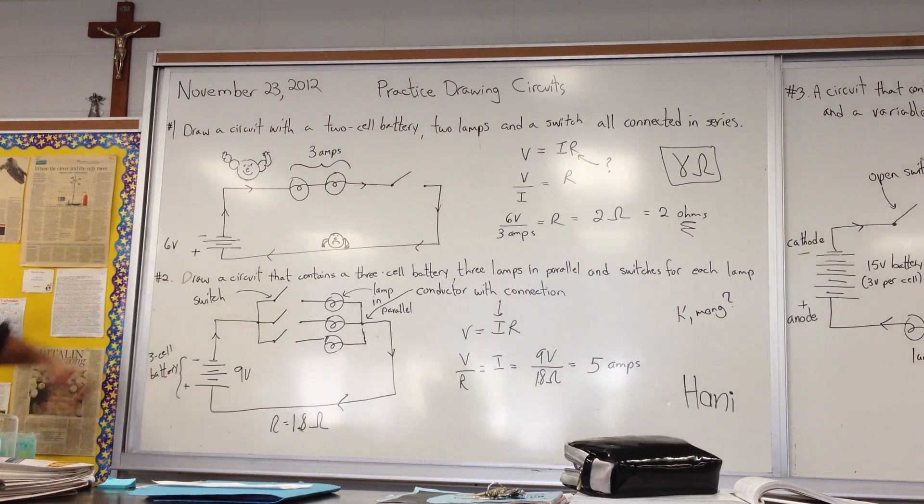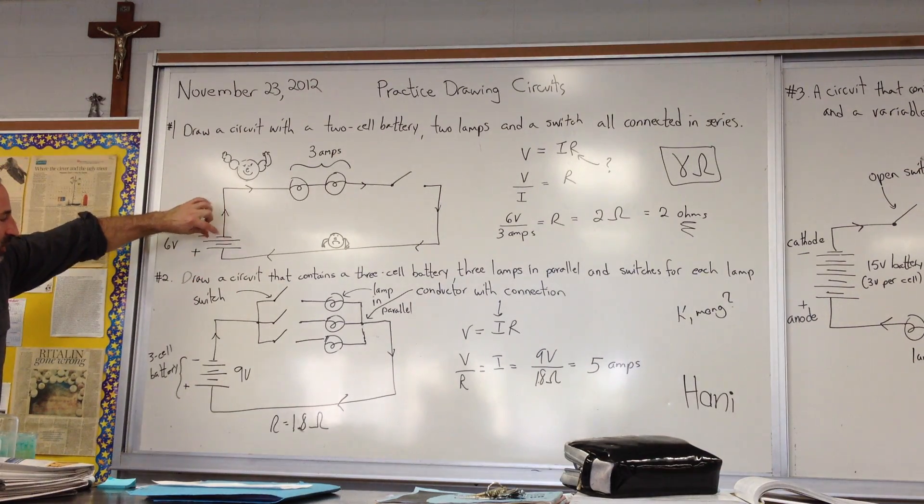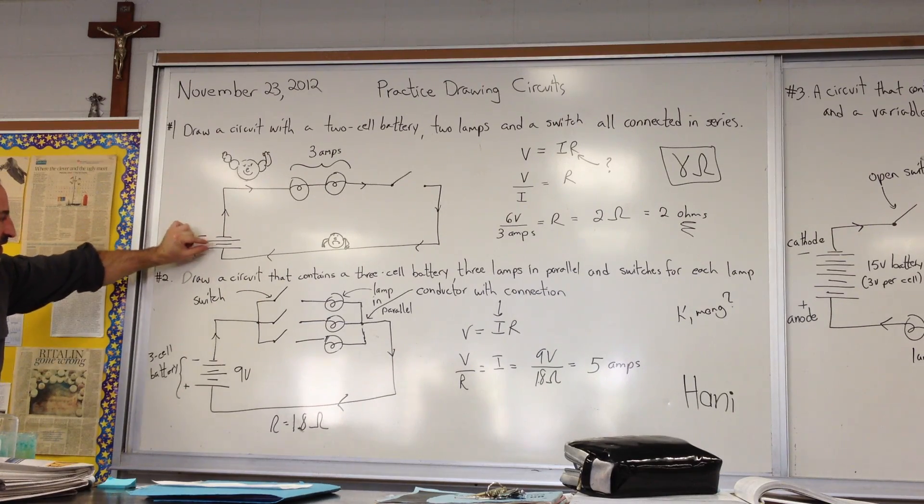And what we show here is, first of all, the cells are depicted by a large line and a small line, that's a battery. And there's two cells there, because you see two of a series of those.